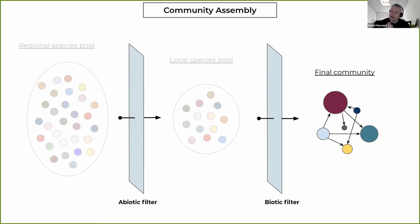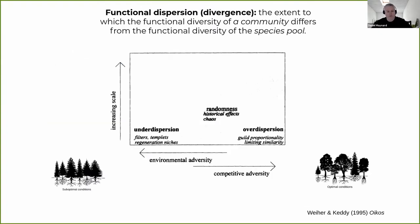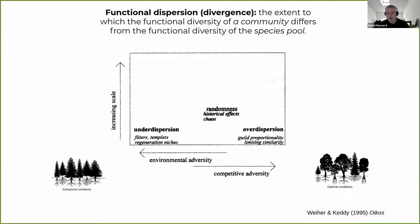Suppose we just go and take snapshots of all these communities. How can we look back in time and try to infer what's going on historically? This idea was proposed about 25 years ago. Beier and Keddie coined the term under-dispersion or over-dispersion, talking about it primarily through the lens of functional dispersion. My definition: it's the extent to which the functional diversity of a community differs from that of the species pool. It's not about whether something is high or low diversity per se, but how the diversity of a local community compares to what could be there.